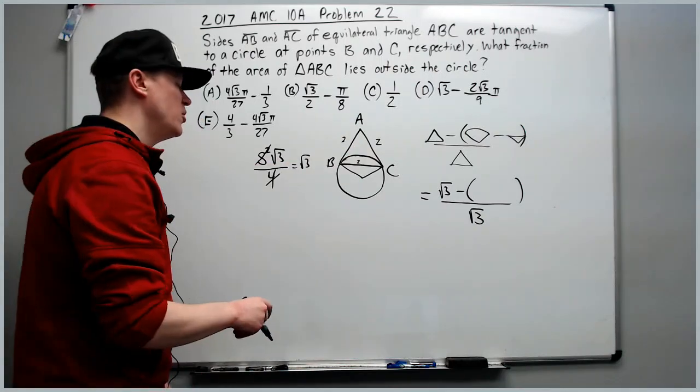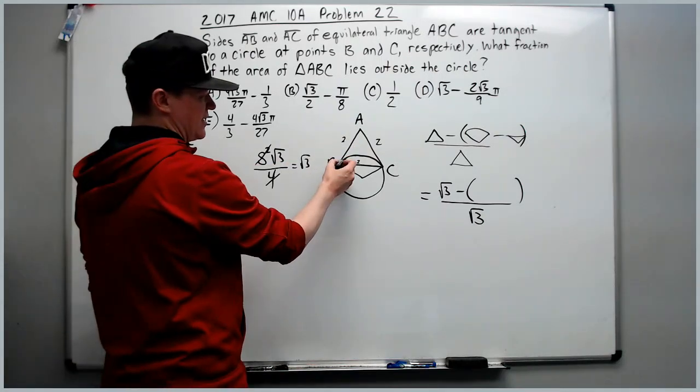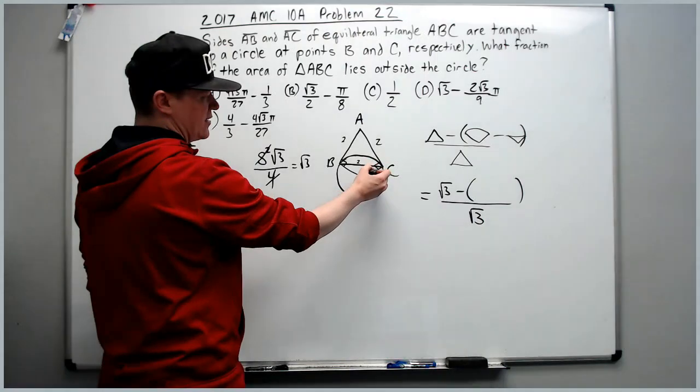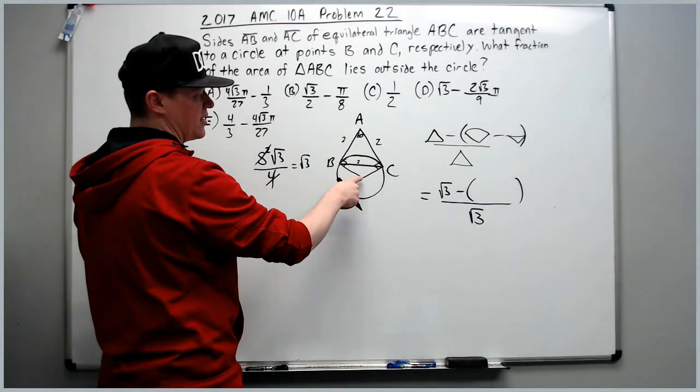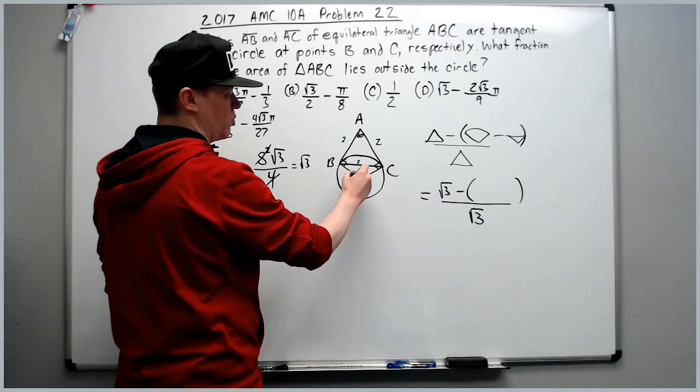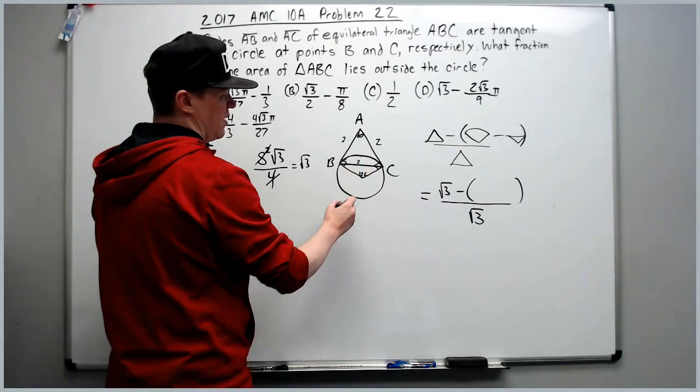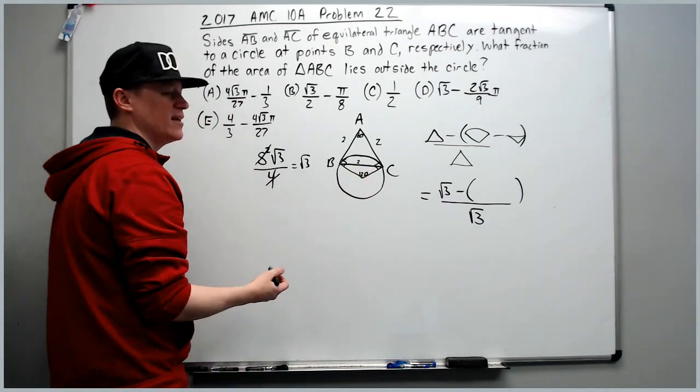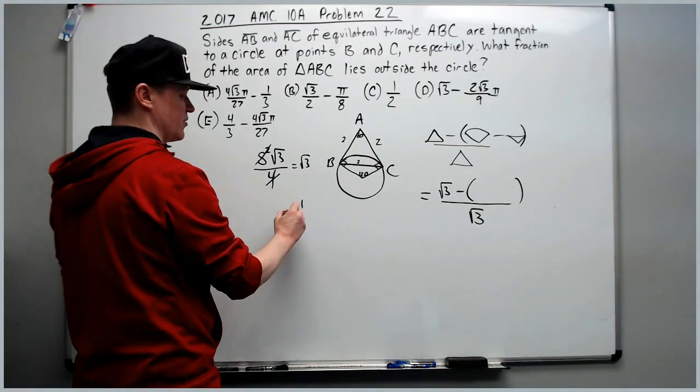Now for the something, we need the sector. Because this is 90 degrees right here and 90 here, and this is 60, we know this central angle of the circle sector is 120. Since that's 120, it's one-third of a circle because there's 360 degrees.